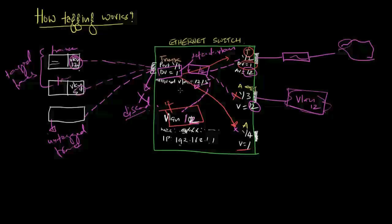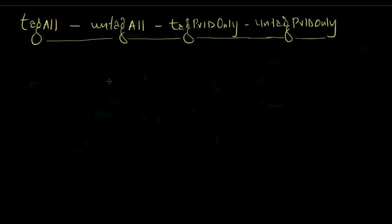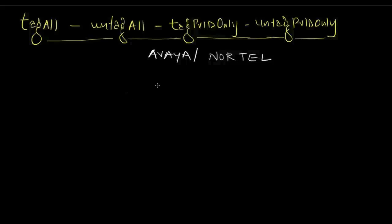In the next part, let's understand Avaya. These are the basic tagging techniques with Avaya Nortel. They came up with their own terminology: tag all, untag all, tag PVID only, untag PVID only. These are Avaya Nortel terminologies. Let me start removing confusion. First of all, PVID means default VLAN. So 10% of confusion is gone.